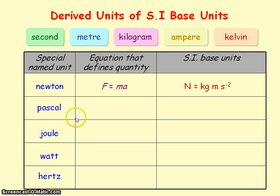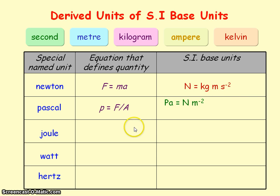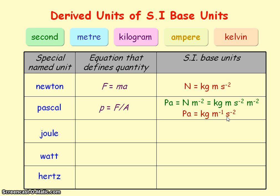The pascal is the unit for pressure, and pressure equals force divided by area. So a pascal is equal to the units of force — newtons — divided by the units of area — meters squared — giving newtons per meters squared. To get the pascal into SI base units, we substitute the newton with kg meters per second squared, so pascal equals kg per meter per second squared.